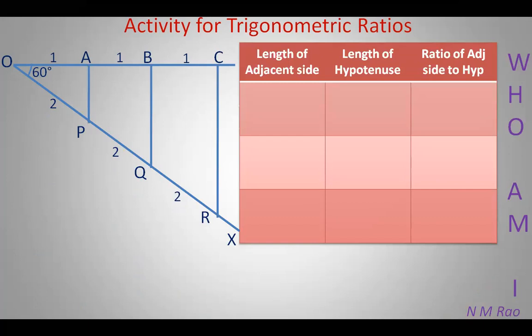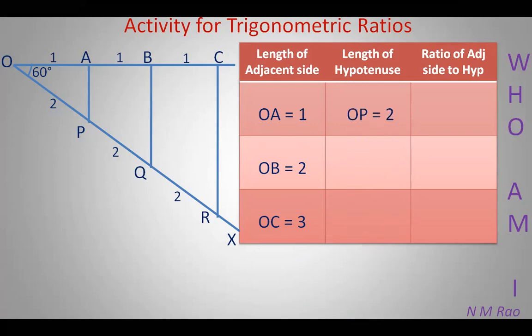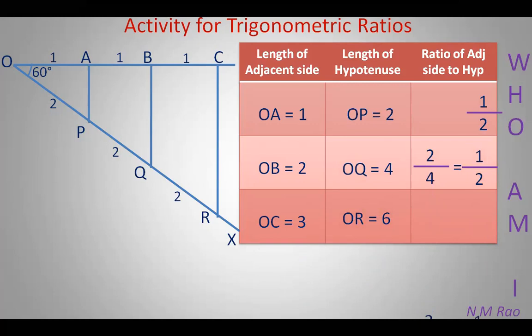Triangle OAP is a right angle triangle in which the adjacent side OA is 1. Triangle OBQ is another right angle triangle in which the adjacent side OB is 2. Triangle OCR is another right angle triangle in which the adjacent side OC is 3. The hypotenuse OP in triangle OAP is 2, in triangle OBQ the hypotenuse OQ is 4, and in triangle OCR the hypotenuse OR is 6. Now find the ratio of adjacent side to hypotenuse: in triangle OAP it is 1/2, in triangle OBQ it is 2/4 which is also 1/2, and in triangle OCR it is 3/6 which is also 1/2. Even though the side lengths are not the same, the ratio of adjacent side to hypotenuse is the same. Isn't it surprising?